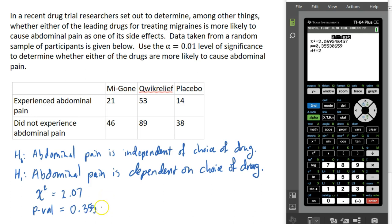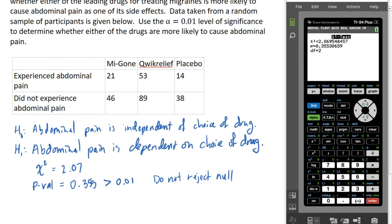And here I get a CHI-square statistic of 2.07 and a p-value of 0.355. In this example, my p-value is greater than alpha, so I do not reject the null. I do not have enough evidence to reject the null here. So, my conclusion would be that abdominal pain is likely independent of the choice of drug. And, you know, because we included a placebo group here and we didn't see much difference even with the inclusion of a placebo group, then it's likely that neither one of these drugs is more likely to cause abdominal pain than not taking a drug at all. So, to suggest one of these drugs causes abdominal pain, that's not a likely scenario based on our test.